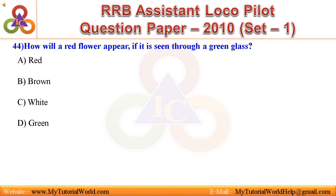Question 44: How will a red flower appear if it is seen through a green glass? A. Red, B. Brown, C. White, D. Green. Answer is Green.